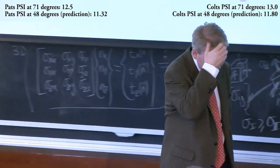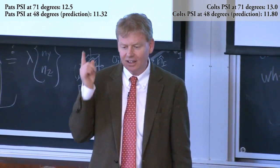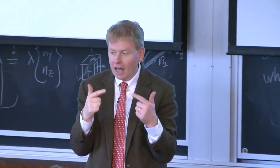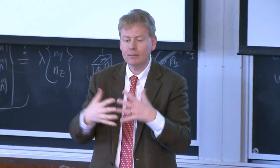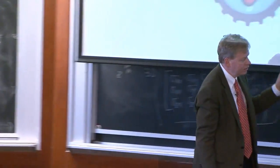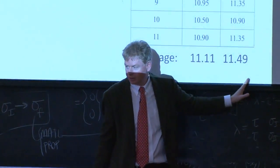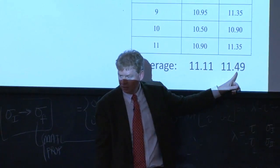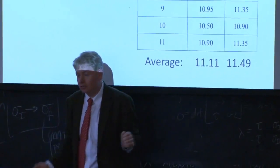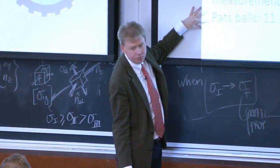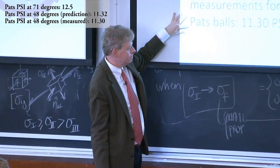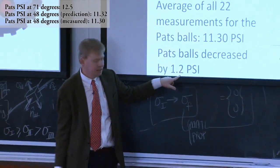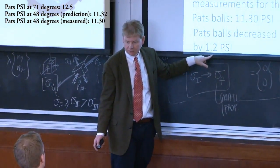Instead of thinking ideal gas law, they thought cheating. Everything went downhill from there. They decided to do this impromptu measurement procedure at halftime. The average of all 22 measurements: 11.30 psi. The Patriots balls started at 12.5 and decreased by 1.2 psi.